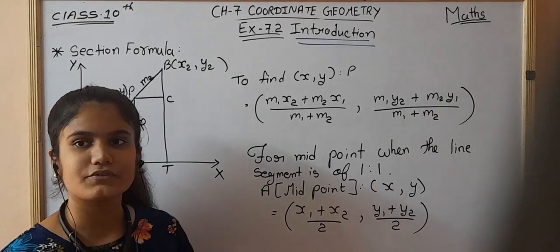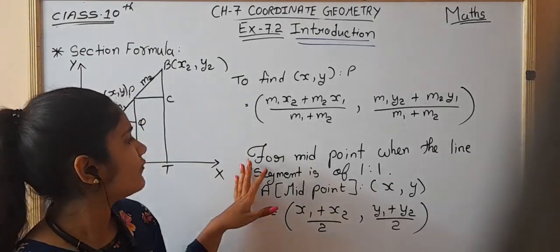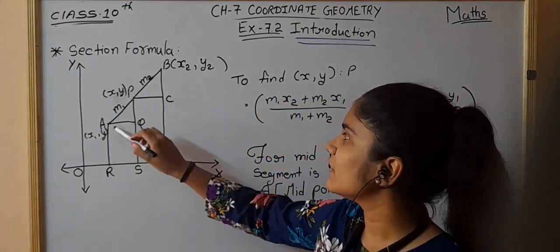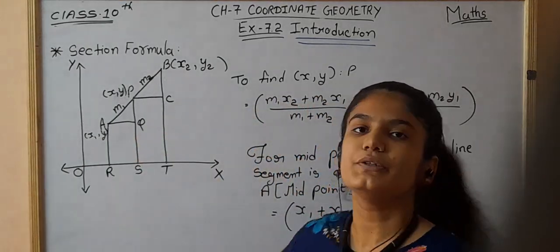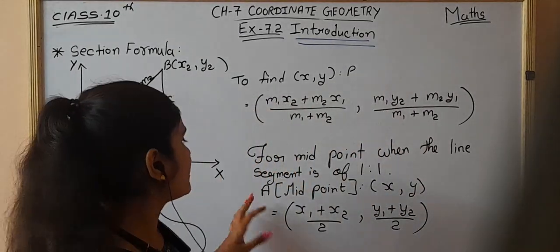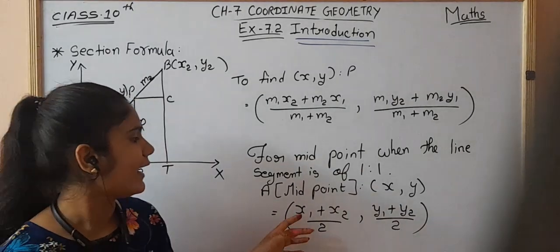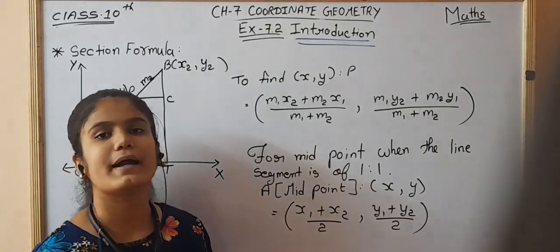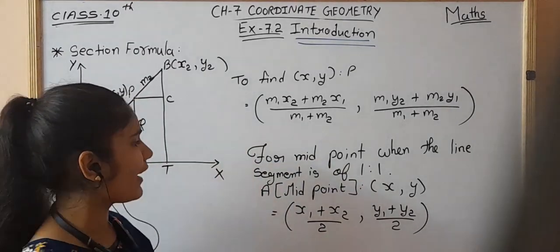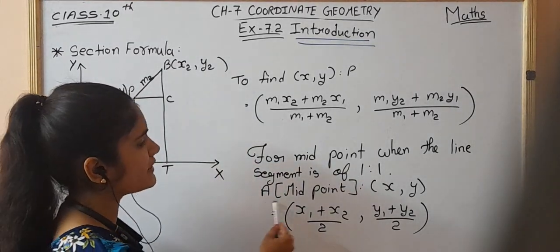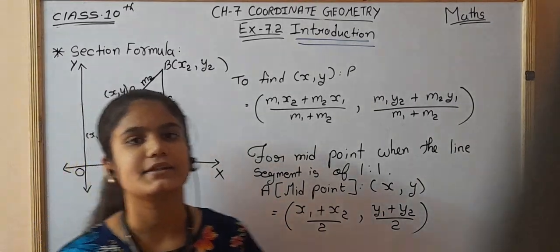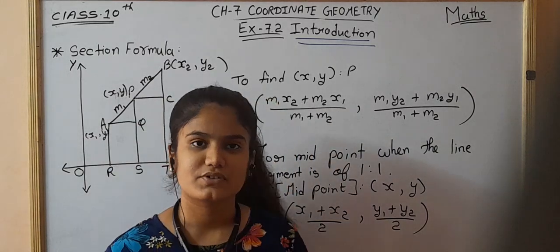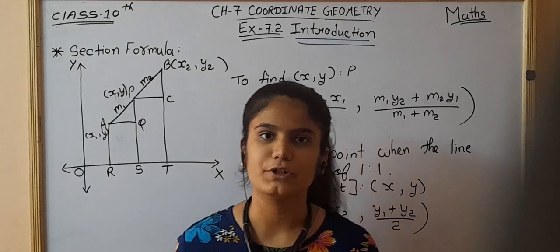There is one more formula for the midpoint. Suppose we have to find the midpoint between two given points. The formula is: x1 plus x2 by 2, and y1 plus y2 by 2, which gives the coordinates of the midpoint x and y. Please pause the video to note down the formulas.